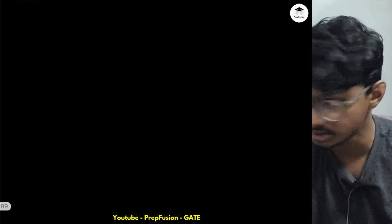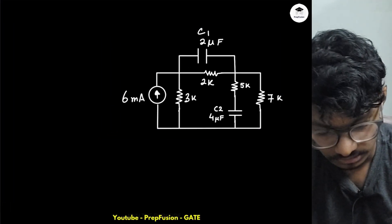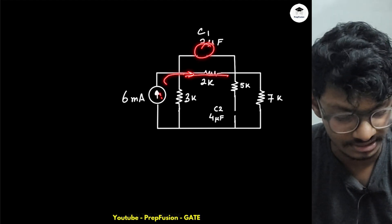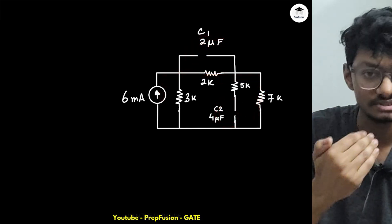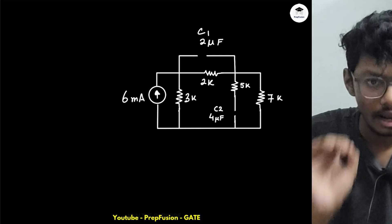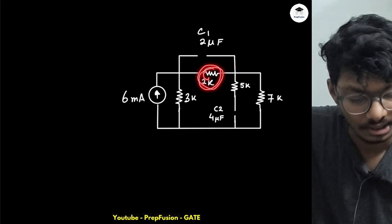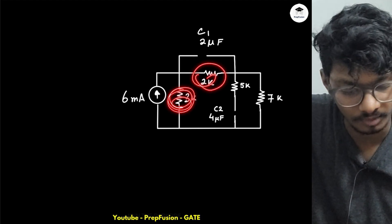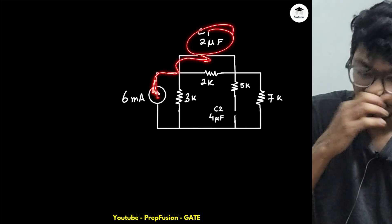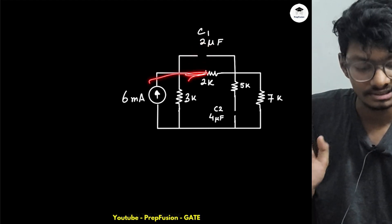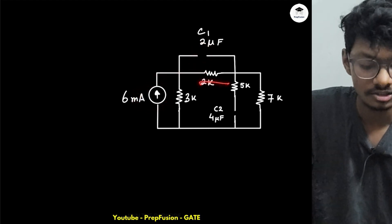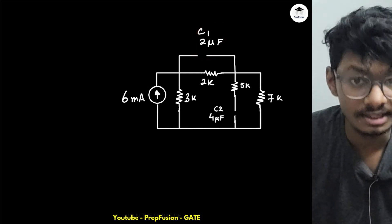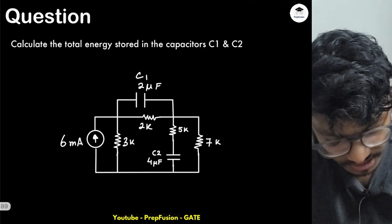At steady state, both C1 and C2 will be open circuit. Current through the capacitor branches will be zero. This is a stable circuit because the current source has a resistive path — if the 2 kΩ and 3 kΩ resistors were absent, the 6 mA current would have to flow through C1 and the voltage would keep increasing. With the resistors present the circuit settles. We can mark the capacitor polarities: C1 charges as +/− VC1 and C2 charges as +/− VC2.